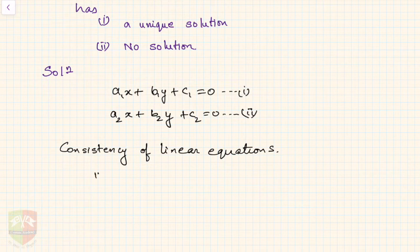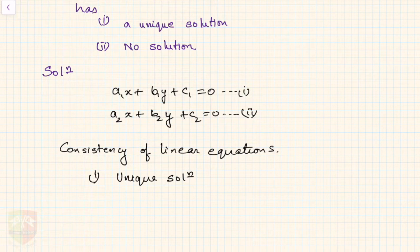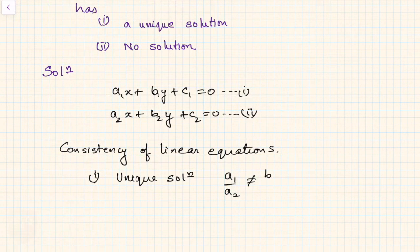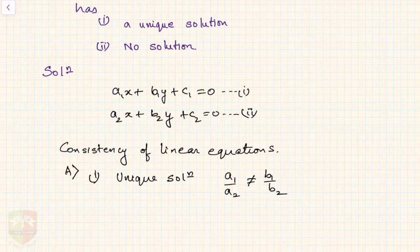Case one is unique solution, which means the equations have only one pair of x and y. For that, the condition is a1 by a2 should not be equal to b1 by b2. This is category A in consistency.